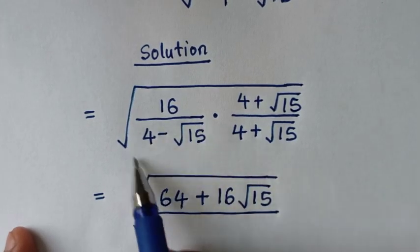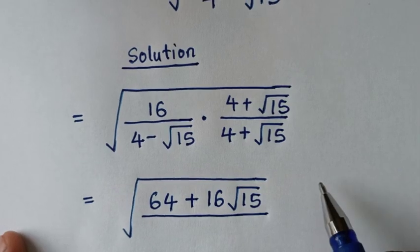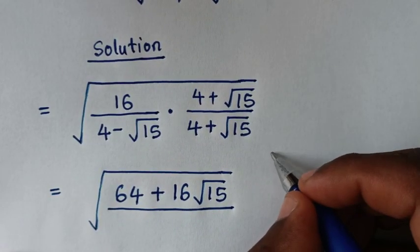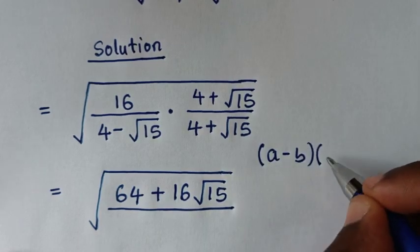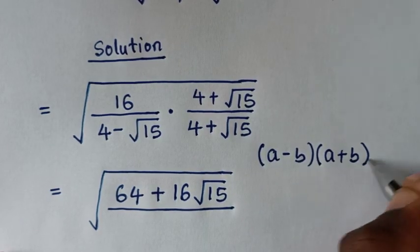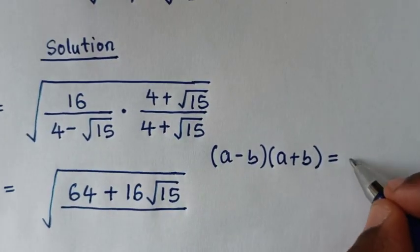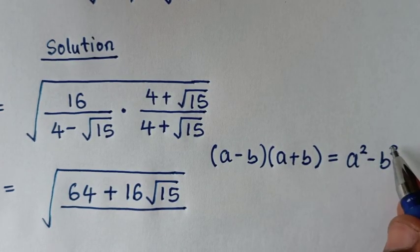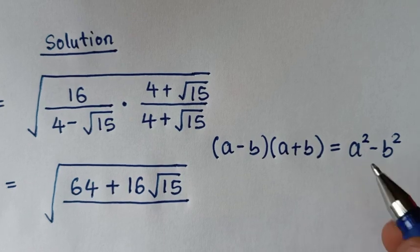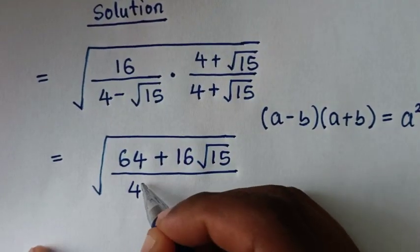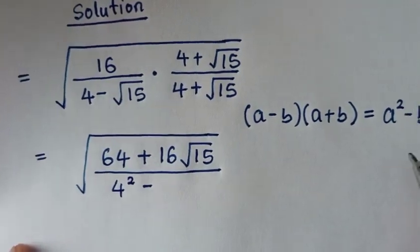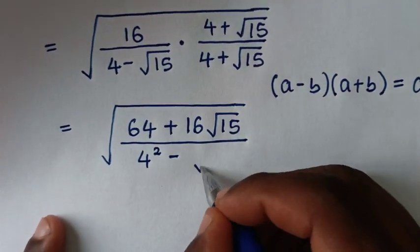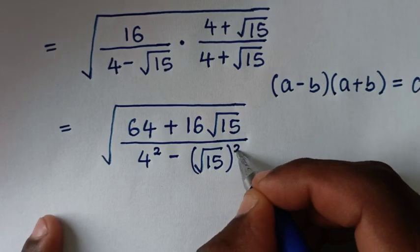Into the denominator, this times this is in the form of a perfect square, whereas the perfect square rule is in the form of (a minus b)(a plus b), which is equal to a squared minus b squared. So we will apply this: from a squared it will be 4 squared, minus b squared, which is square root of 15, squared.